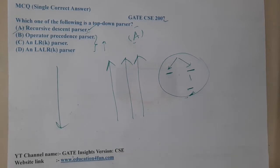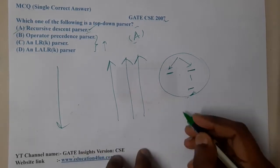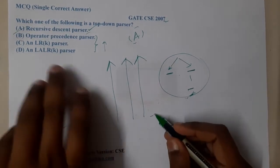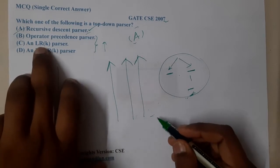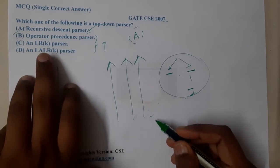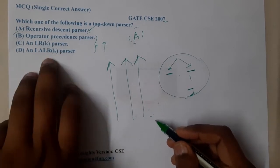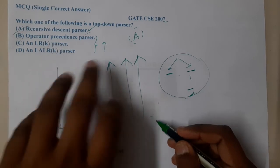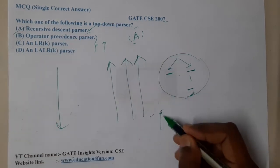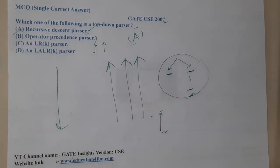On the other hand, you have bottom-up parsers: LR(0), LR(1), SLR(1), LALR(1), and operator precedence. Those are the five different types which are bottom-up parsers.